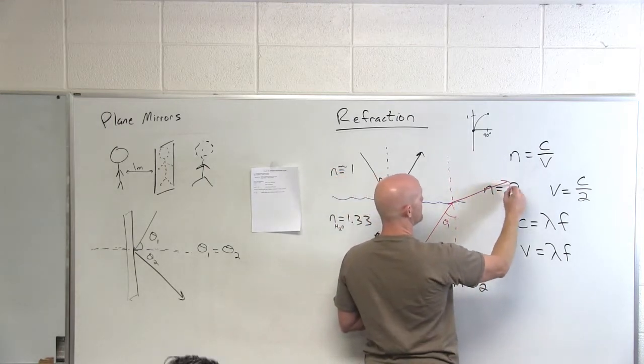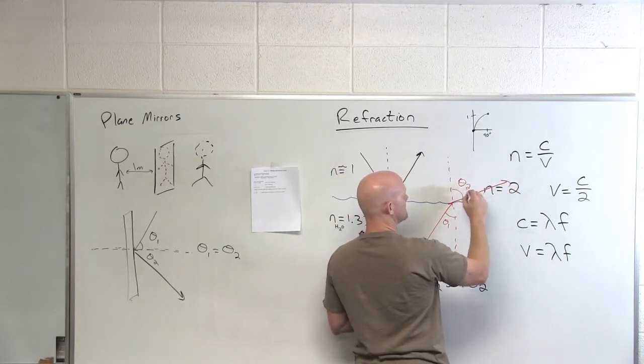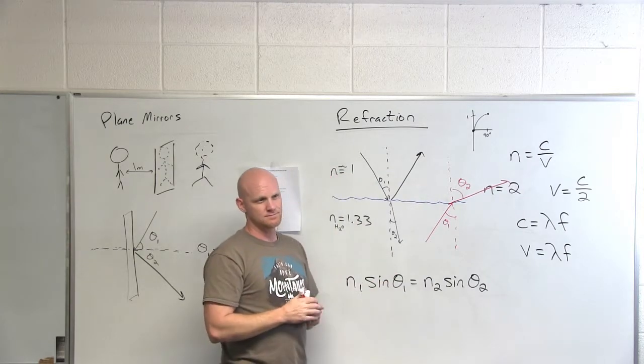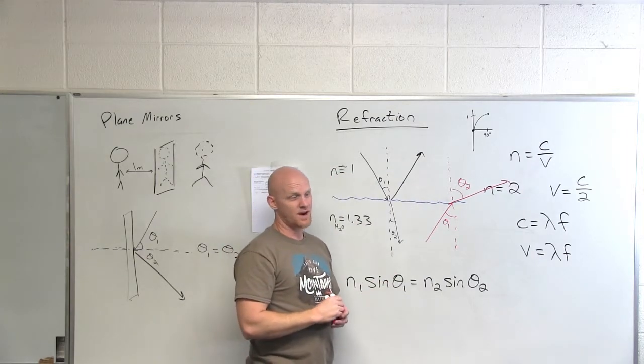And so in this time, it's going to bend away from the normal. That way, theta 2 is bigger than theta 1. And that's how refraction works.